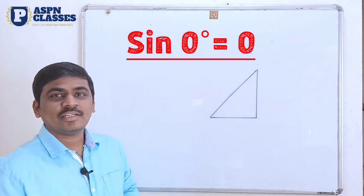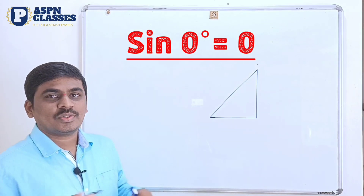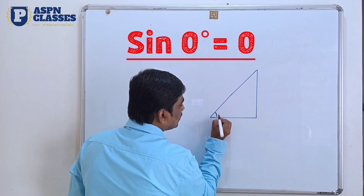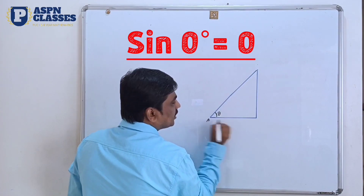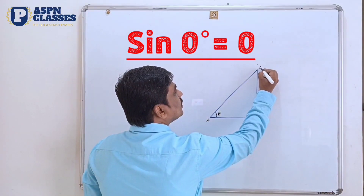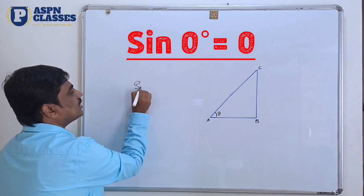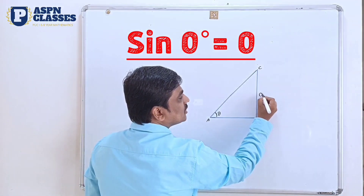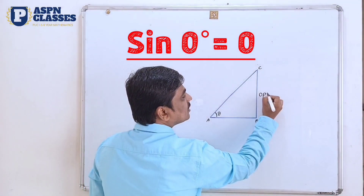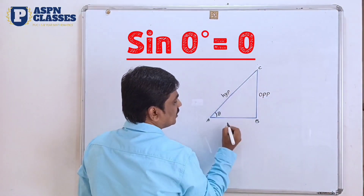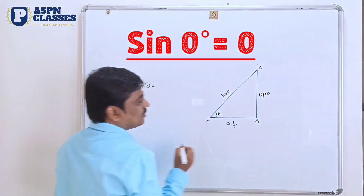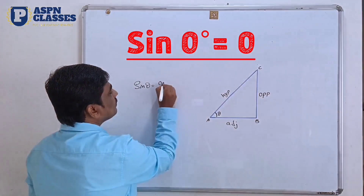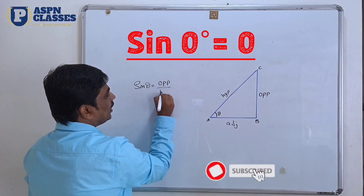So sin and theta are already done. If we are going to denote the right angle with theta, we will take this name. What is sin theta? Sin theta is equal to the opposite side.